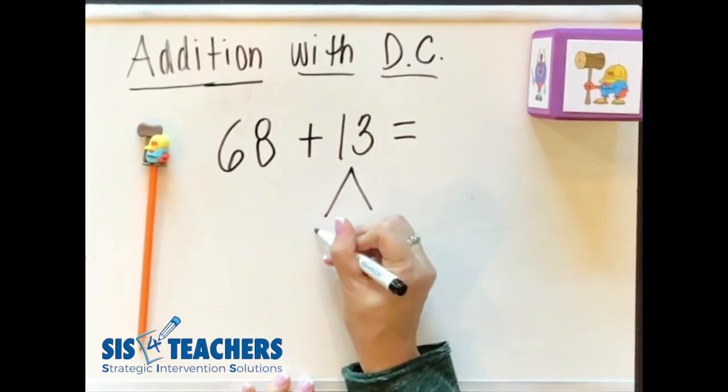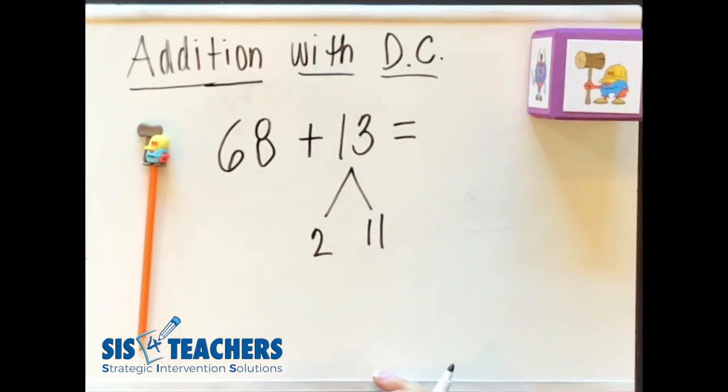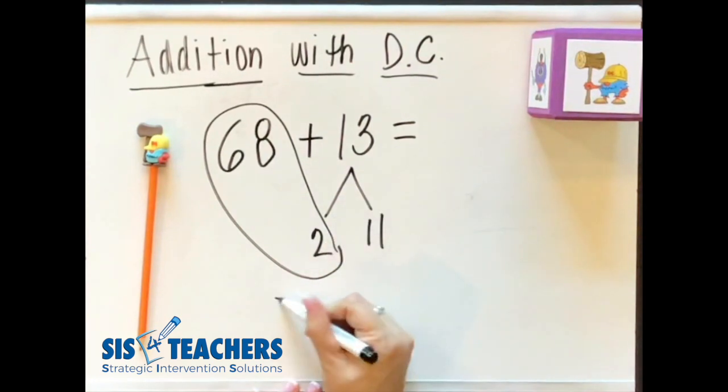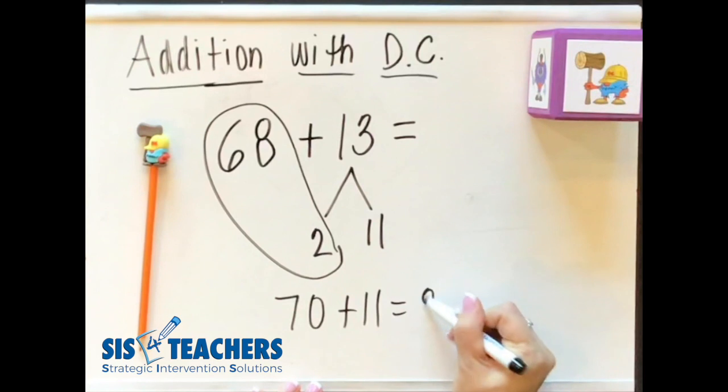And so he's going to pull two out of the 13, leaving the 11 here. He knows if he takes this two and adds it to the 68, it's going to make a nice friendly 70. When he adds that to the 11, he knows that he has the number 81.